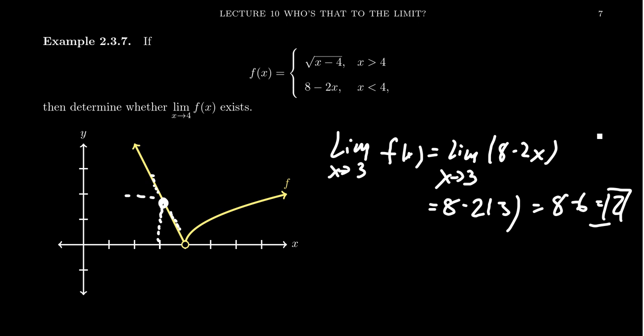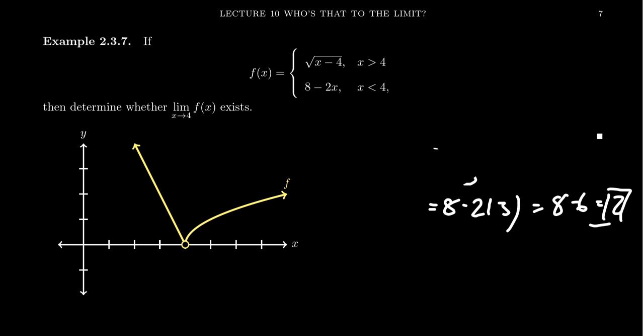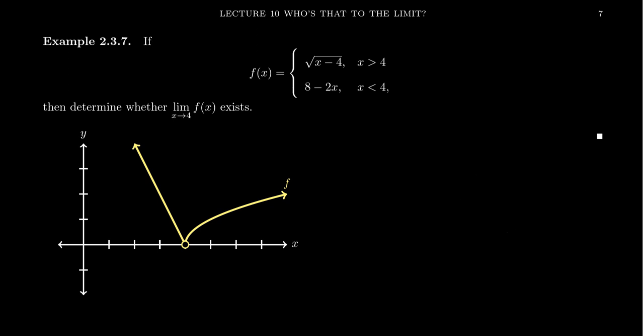If we want to compute a limit when we're not near the switching numbers, we just look at what's going on in that piece. When it comes to piecewise functions, the switching numbers are the most interesting because that's where the function switches behavior.